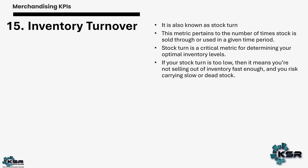Now let's look at merchandising KPIs. One of the most important is inventory turnover — it suggests how efficiently a business is utilizing its inventory and selling it at a faster rate, helping to optimize working capital. Also known as stock turn, this metric indicates how many times stock is sold in a given time period. Higher the inventory turnover, better for the business. Low stock turn means you are carrying slow-moving items, resulting in dead stock.